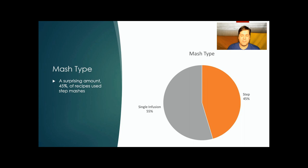Mash type. I was kind of surprised to see 45% use the step mash, but with this much wheat, you're going to need to do something with that protein.